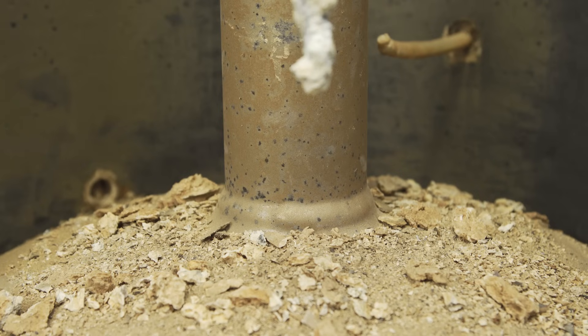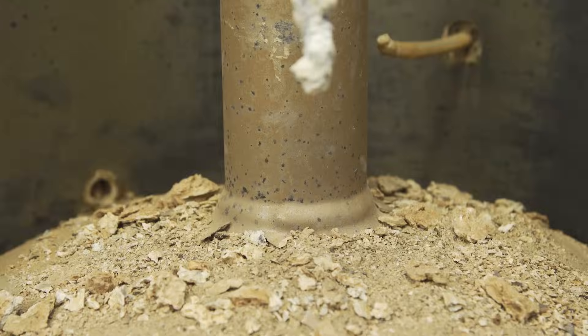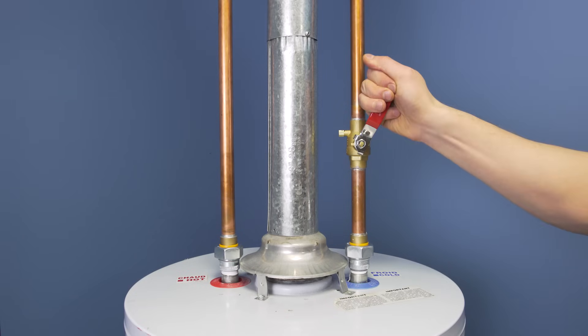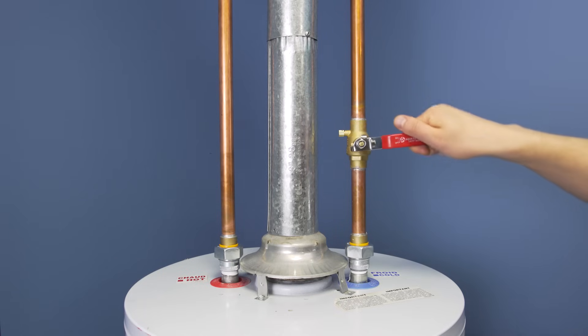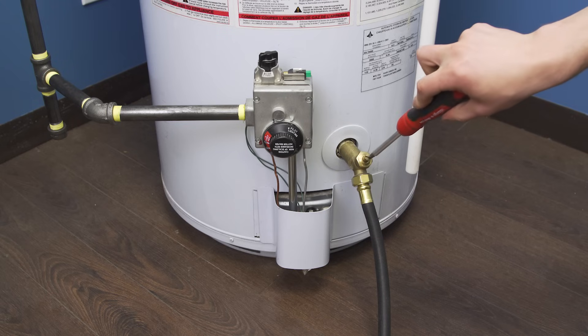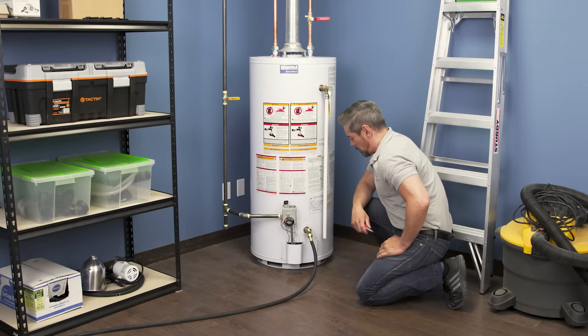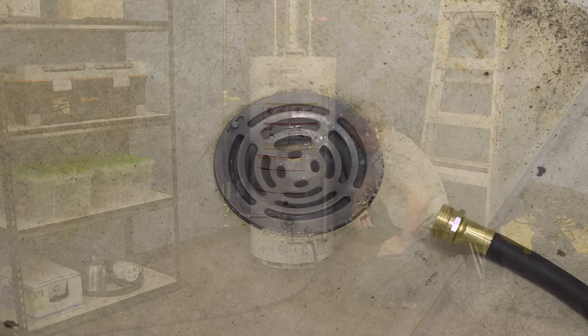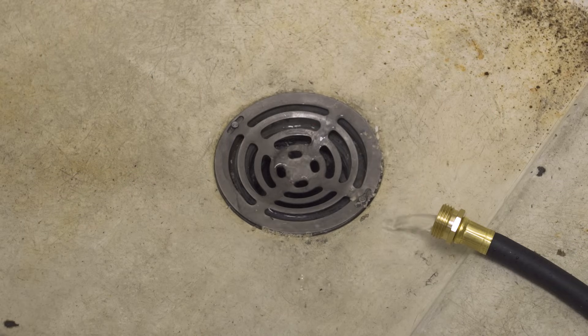Now that the tank is empty, you can do a flush to remove some of the built up sediment. Turn on the cold supply for 20 seconds to blast water into the bottom of the tank. This will agitate and lift the sediment. Now drain the water. You can repeat this 4 or 5 times as needed until the water draining out of the hose is running clear.